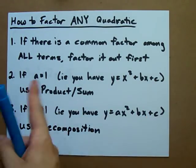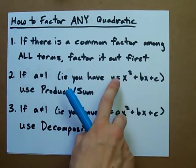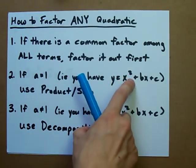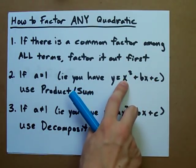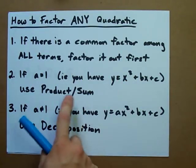Then you have to look at what's left. If you're left with x squared plus something x plus something, and it's just a bare x squared, then you can use product sum.